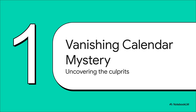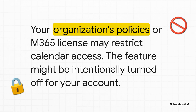Let's kick things off with part one: the vanishing calendar mystery. To really solve a problem, you first have to understand what's causing it. So what's actually going on behind the scenes when your calendar just goes poof? Culprit number one — and honestly, this is a big one — is all about permissions and licensing. A lot of the time, this is actually out of your hands. Your company's IT policies might be set up to restrict calendar access, or you might have a Microsoft 365 license that just doesn't include the full calendar feature. So it might not even be broken — it could have been turned off for your account on purpose.